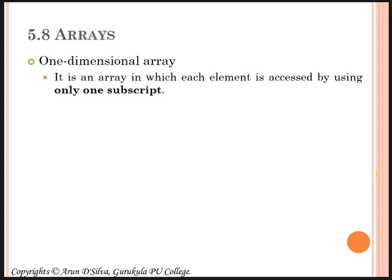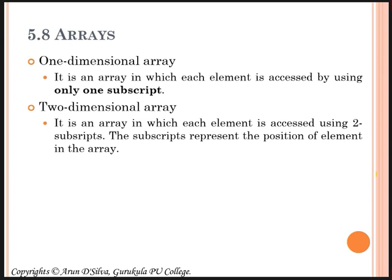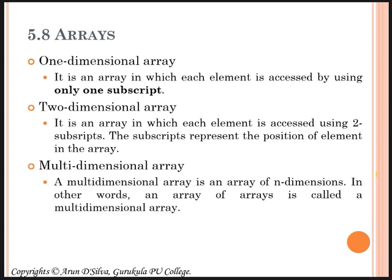Next are arrays, which I already discussed in chapter four. Just to recap: there are two main types of arrays — one-dimensional array and two-dimensional array. A one-dimensional array is declared using one subscript; a two-dimensional array uses two subscripts; and a multi-dimensional array uses more than two subscripts.